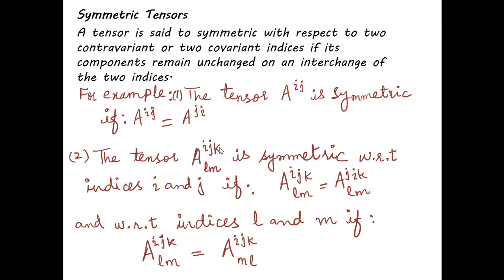The tensor aijklm is symmetric with respect to indices i and j if, on interchanging i and j, aijklm equals ajiklm. And similarly, with respect to indices l and m, if aijklm equals aijkml.